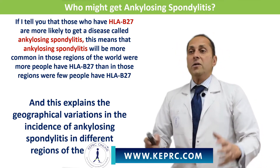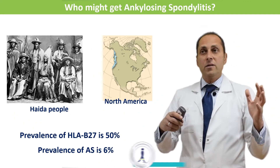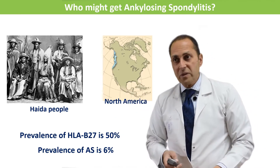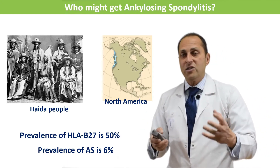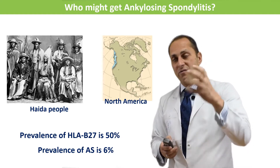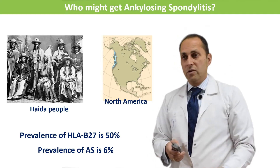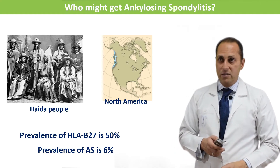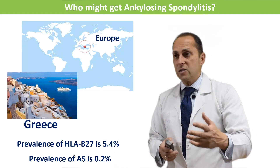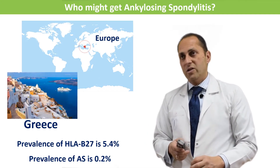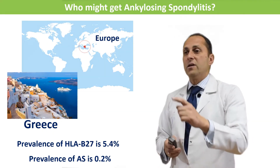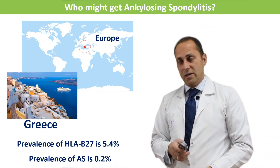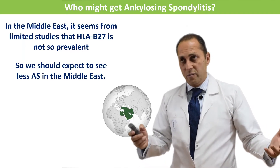There is a region on the west coast of North America called Haida — the Haida people live there. Fifty percent of the Haida people have HLA-B27, and they have the highest possible prevalence of ankylosing spondylitis in the world: about six percent — six out of every 100 persons have or might get ankylosing spondylitis. Contrast this to somewhere in Europe like Greece, where only five percent of the population have B27, and you get only 0.2 percent of the population who actually get ankylosing spondylitis.